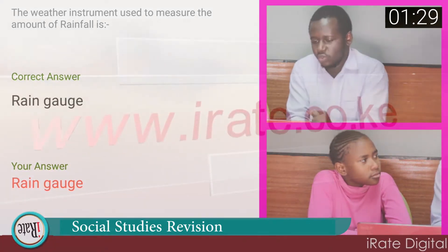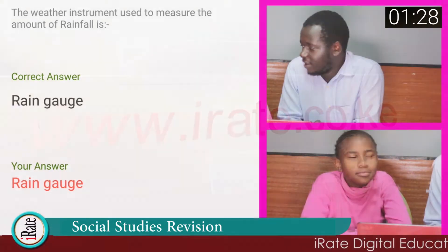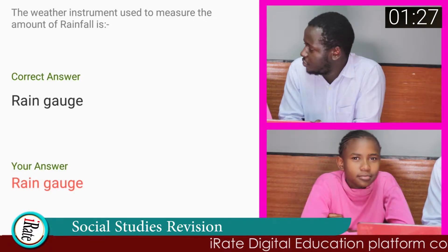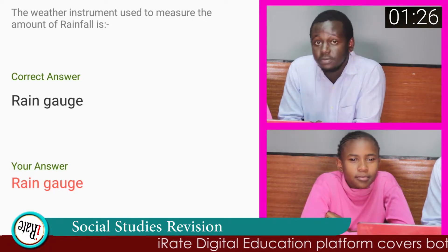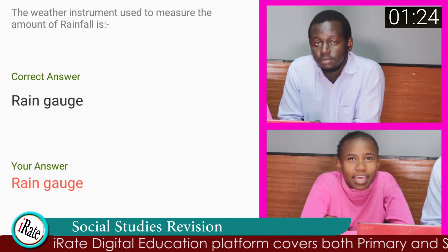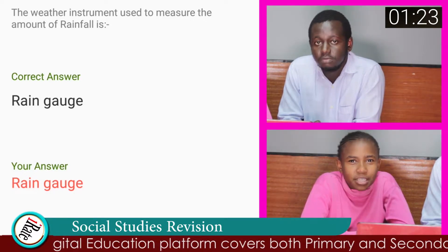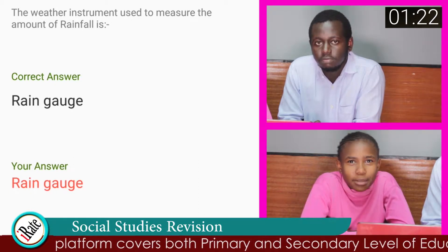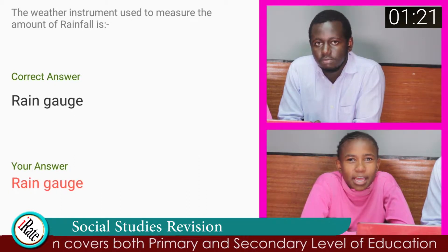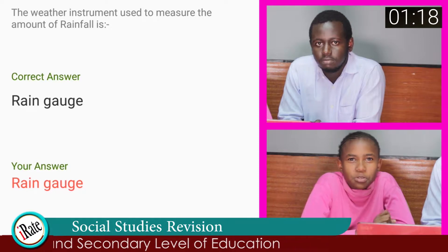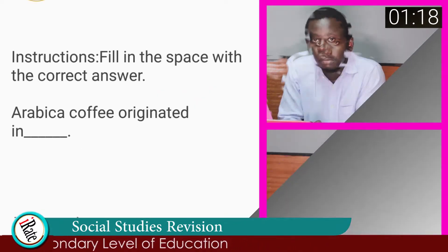What other weather measurement instruments do you know? Hygrometer — it measures humidity. Barometer — it measures air pressure. And anemometer — it measures the speed of wind.